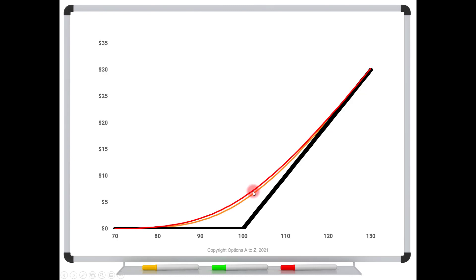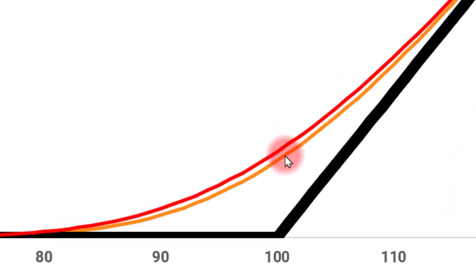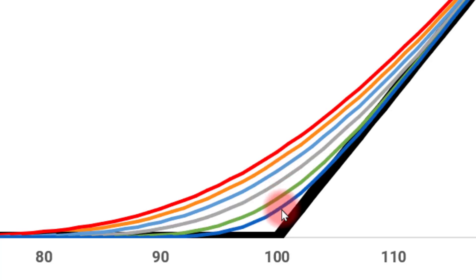So maybe this is 30 days to expiration out here in red. Ten days later, that current curve is going to sink down a little bit. That difference is theta. Maybe another 10 days goes by, your current curve sinks to here. Another 10 days, another 10 days, and it just keeps going.